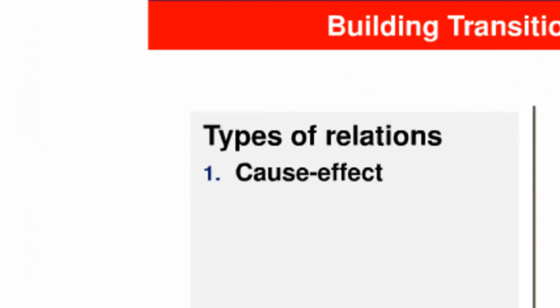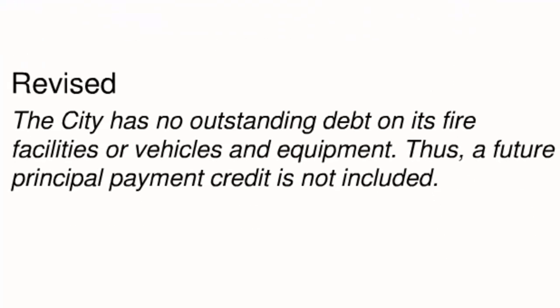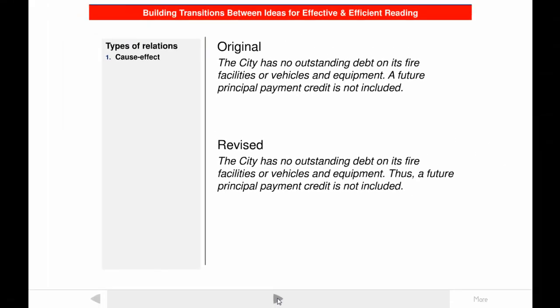The first type of relation that can be shown by transitions is cause and effect. Look at the passage from the executive summary of the planning consultant's report and tell me what you think the relation is between the ideas expressed in the two sentences. Most of us will probably agree the relation is cause and effect — the cause expressed in the first sentence and the effect in the second. The writer could make the message more effective and efficient by inserting a transition like "thus." Transitions improve effectiveness because the reader is much less likely to be confused about the intended meaning, and improve efficiency because the reader doesn't have to think as long about the writer's logic.